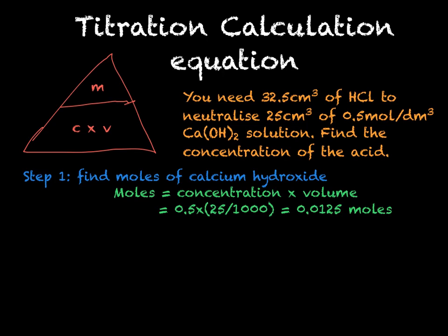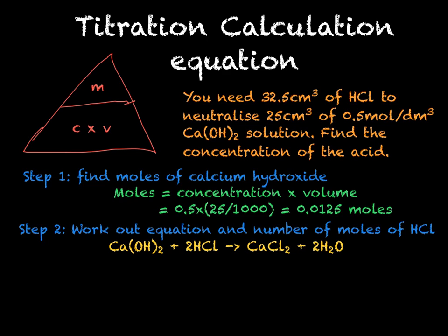For step two, write the equation for the reaction and work out the moles of hydrochloric acid. The unbalanced equation is Ca(OH)₂ + HCl → CaCl₂ + H₂O, and the balanced equation is Ca(OH)₂ + 2HCl → CaCl₂ + 2H₂O. From this we can see a 1 to 2 ratio: for every one mole of calcium hydroxide, we need two moles of HCl. So: 0.0125 × 2 = 0.025 moles of hydrochloric acid.